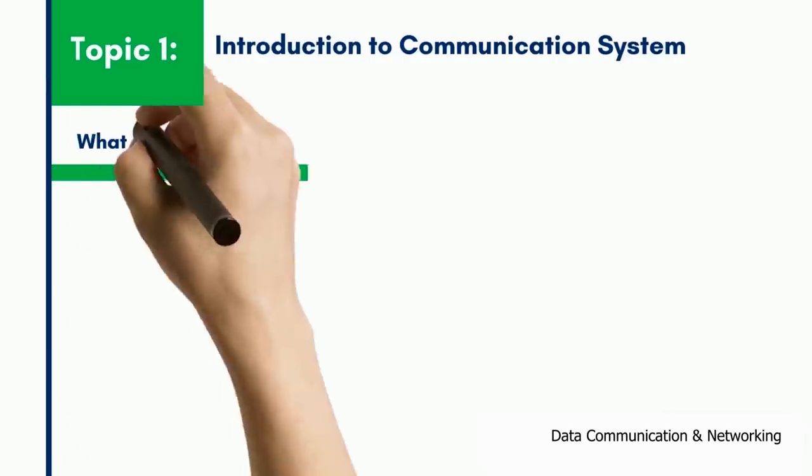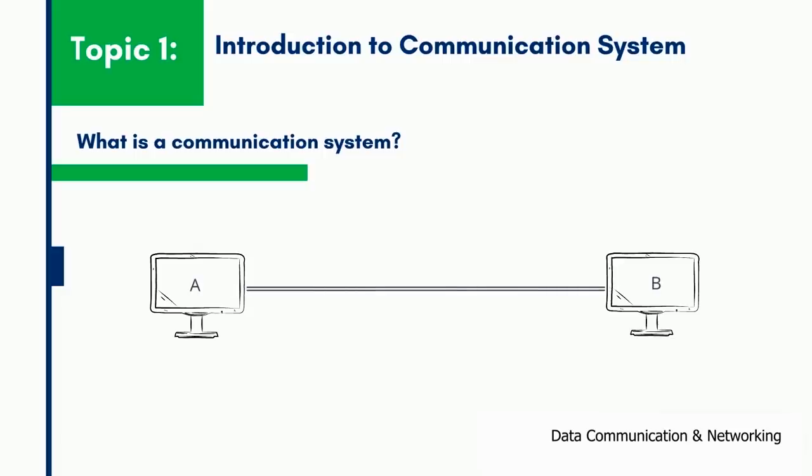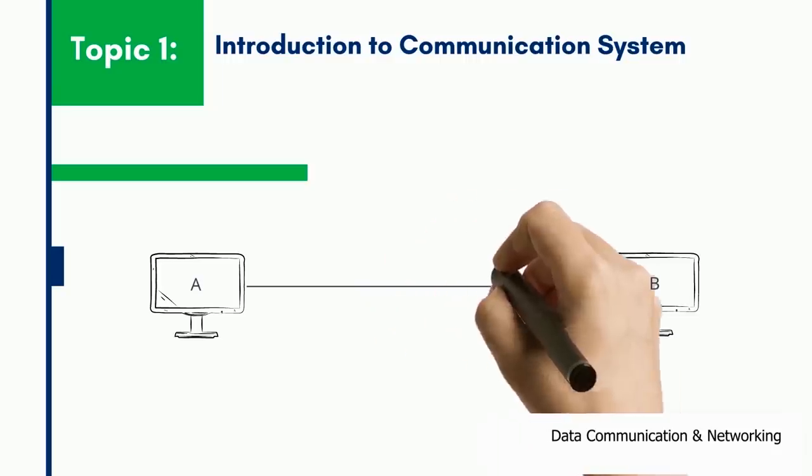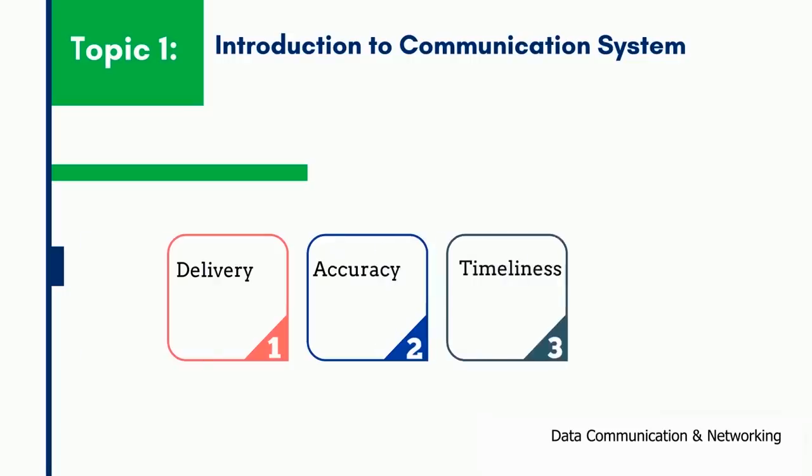Let's start with the first topic: what is a communication system? The fundamental purpose of a communication system is the exchange of data between two communicable devices. To make communication possible, the devices need to be connected through some form of transmission medium such as a wired cable. For data communication to occur, the communicating device must be part of a communication system made up of a combination of hardware and software. The effectiveness of a data communication system depends on four fundamental characteristics: delivery, accuracy, timeliness, and jitter.